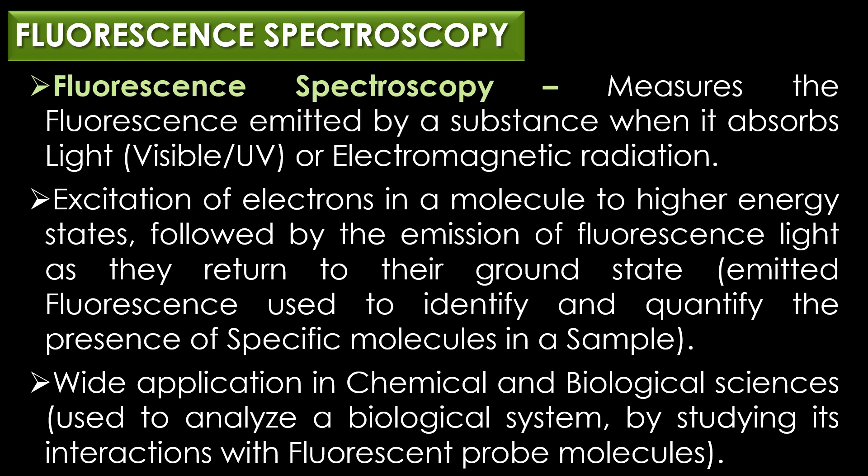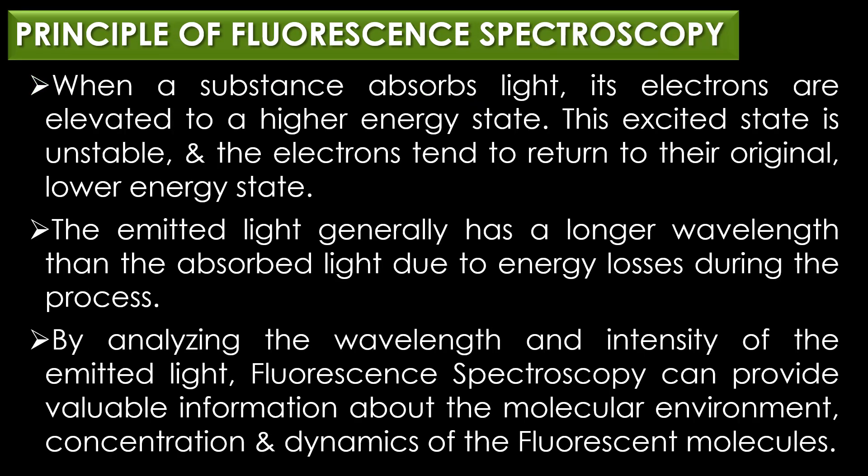The principle of fluorescence spectroscopy is based on molecular excitation and emission of light. When a substance absorbs light, typically in the ultraviolet or visible region, its electrons are elevated to a higher energy state. This excited state is unstable, and the electrons tend to return to their original low energy state. As the electrons drop back to their ground state, they release the excess energy in the form of light — a process called fluorescence.